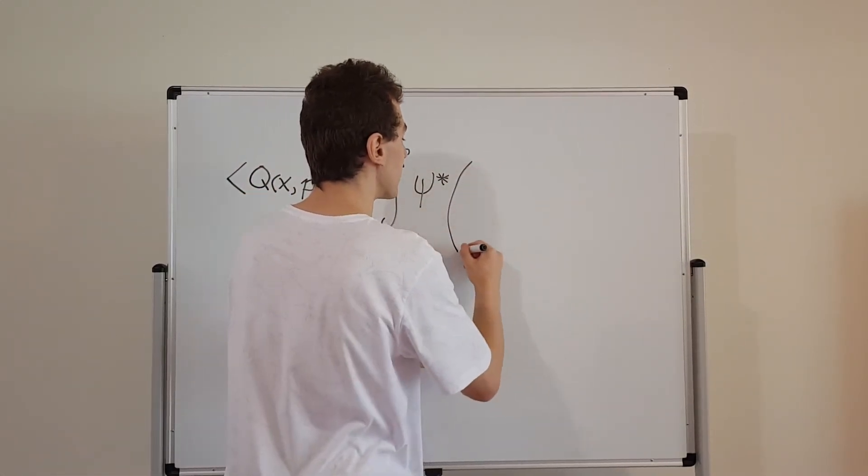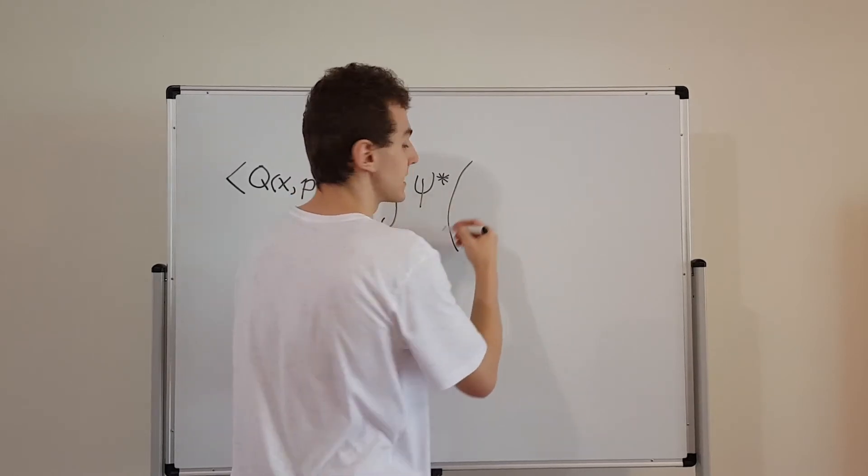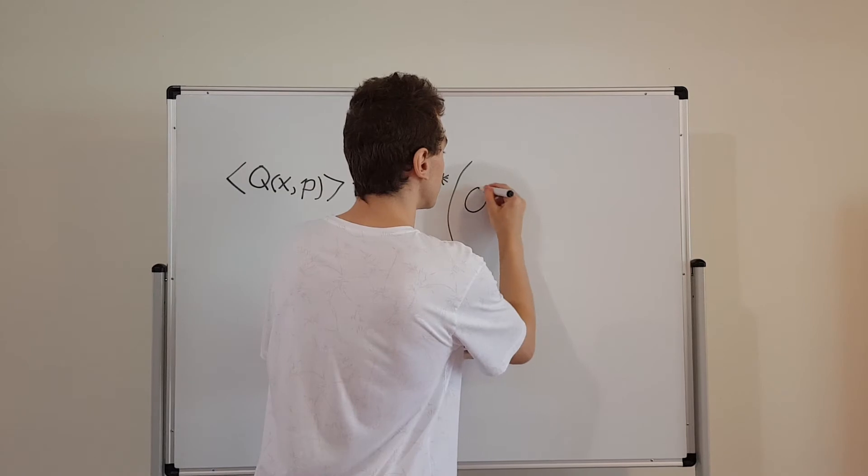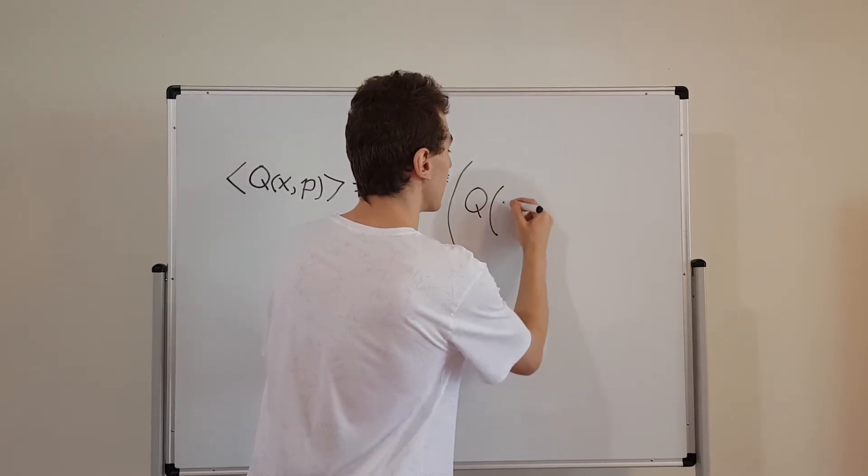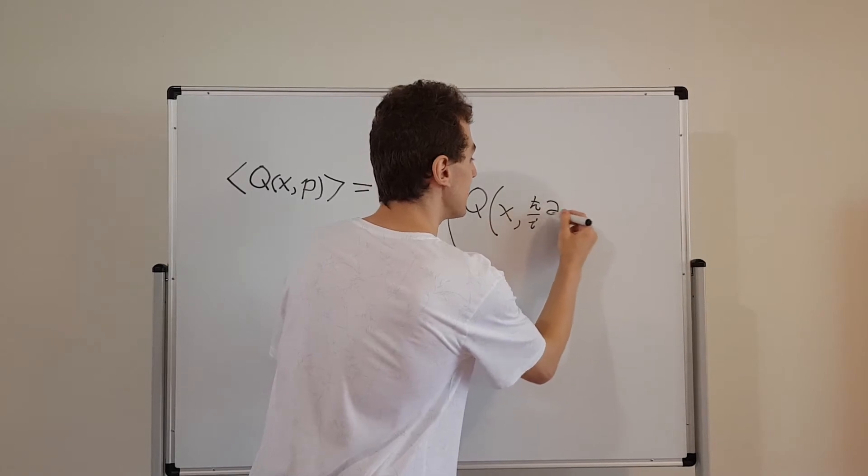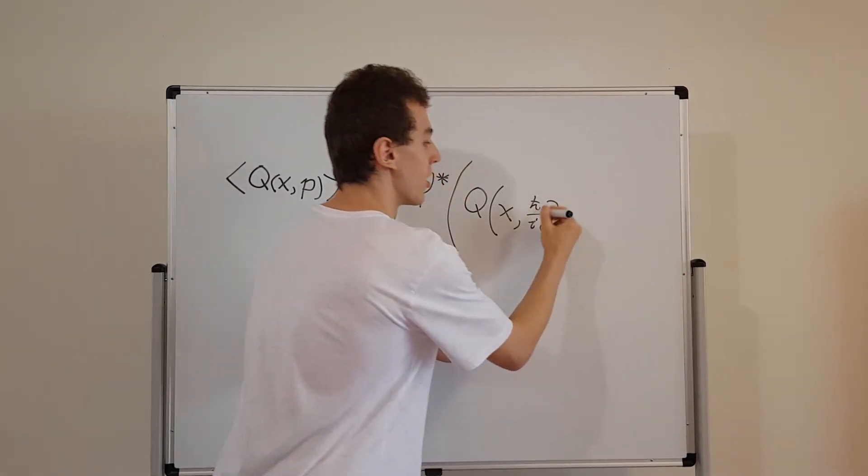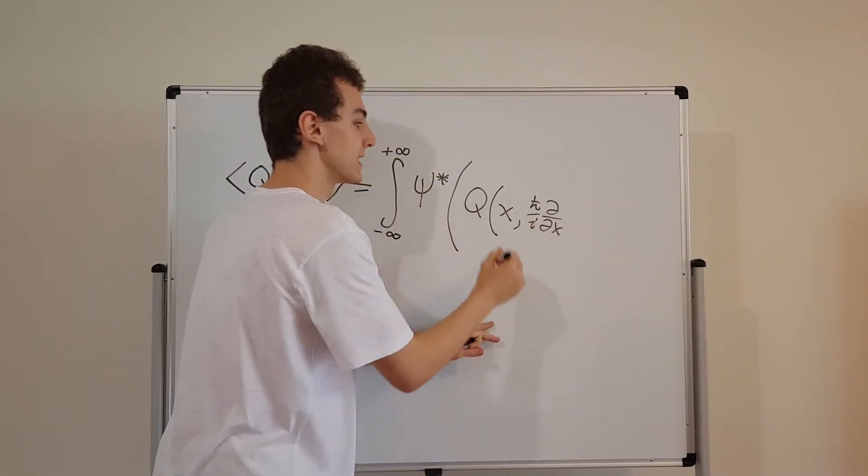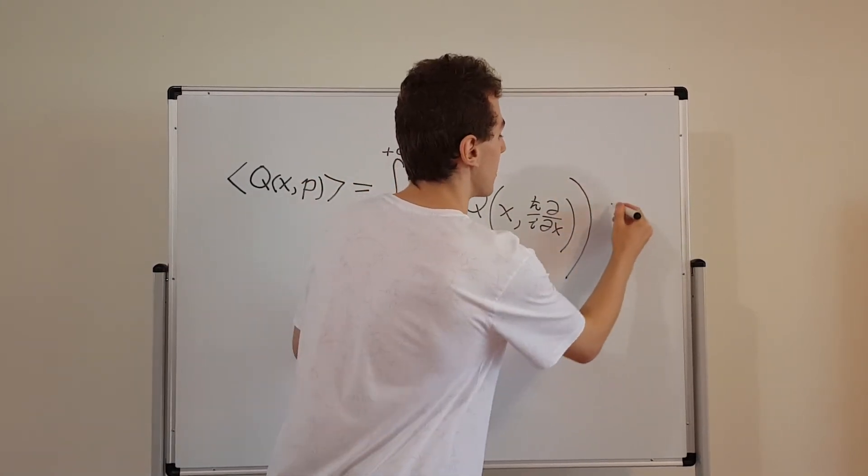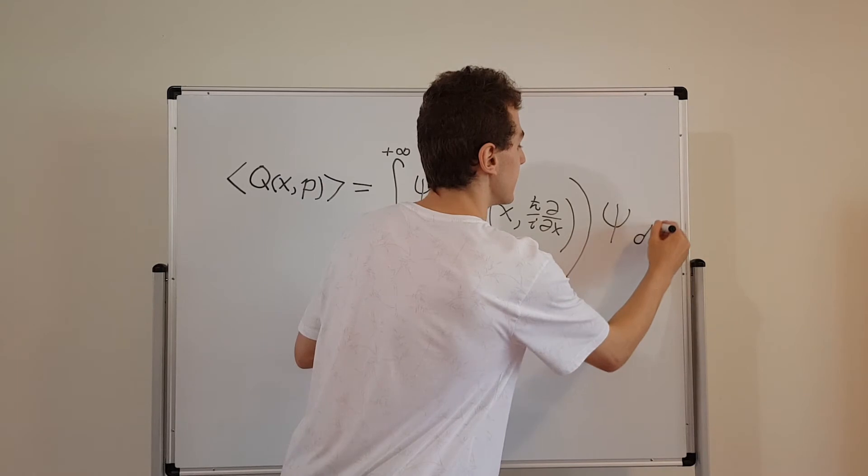And then on the inside over here, we're going to have some kind of combination of X and P. So that's going to be Q as a function of X and h bar over i times d dx. So some combination of this little derivative mess and this X. I'm going to combine these guys together and then we're going to have Psi over here and dx.